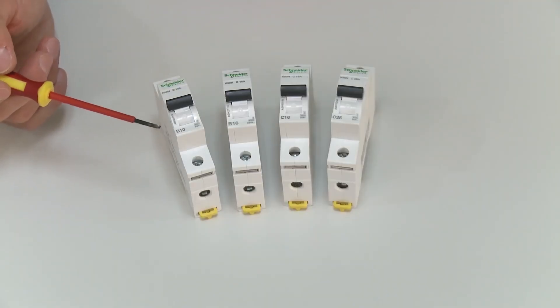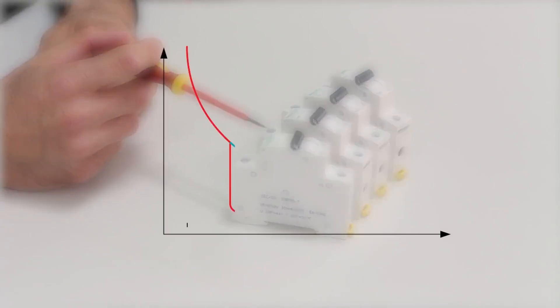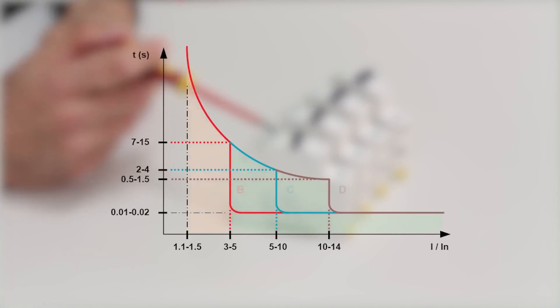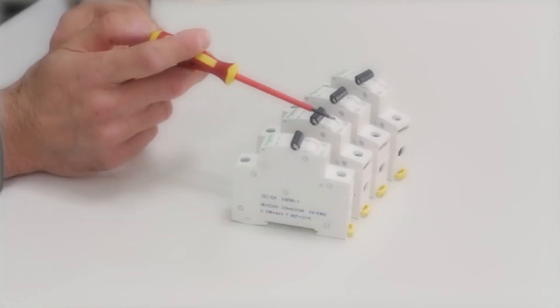As for the trip curves, we distinguish between circuit breakers of curve B and curve C. Circuit breakers of curve B will trip when the current flowing through it reaches 5 times rated current, and circuit breakers of curve C will trip only when it reaches 30 times rated current. So for modular enclosures in residential construction we will use circuit breakers of curve B.